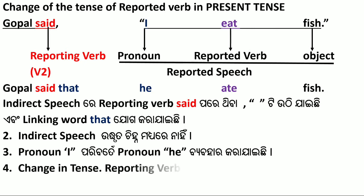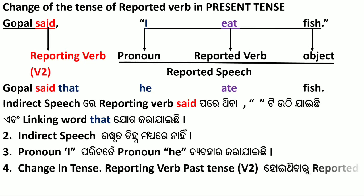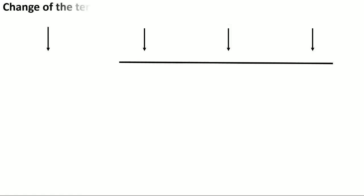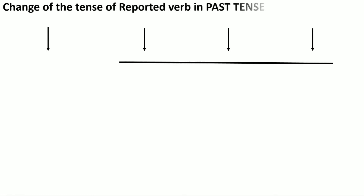Change in tense. When the reporting verb is in past tense (second form), the reported verb changes: V1 is replaced by V2 (ate). This is how the tense change works. Now, change in tense — reported verb in past tense.